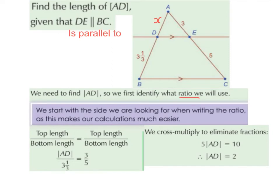Let's identify what the top length is first. The top length is going to be X on the left-hand side, or just AD — you can write that as AD or X. The bottom length on the left-hand side is 3 and one third, so we swap bottom length for 3⅓ on the left.